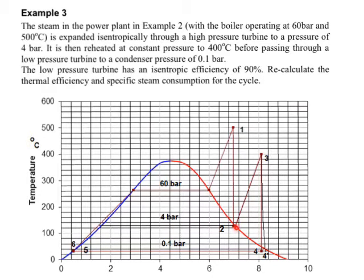Then there is a process of reheating. Physically, the steam returns to the boiler and there is a special reheater section which reheats the steam, in this case, to 400 degrees constant pressure before passing through the low pressure turbine to our final pressure of 0.1 bar.